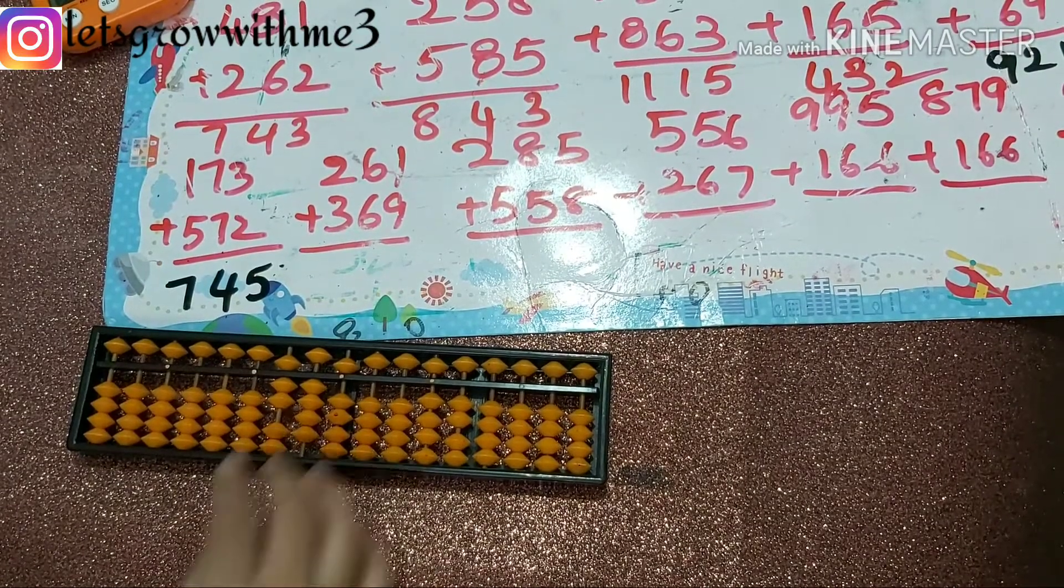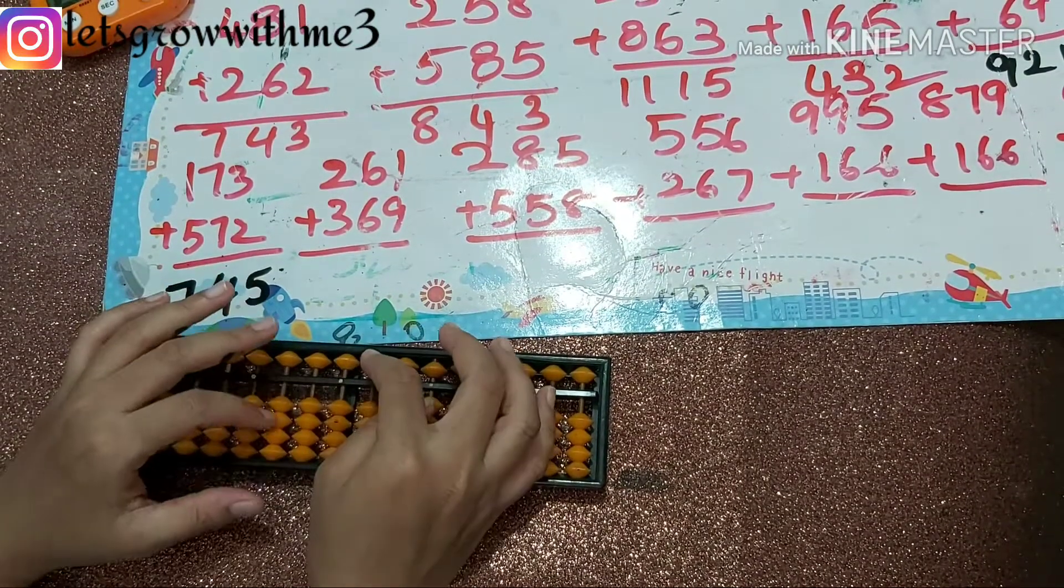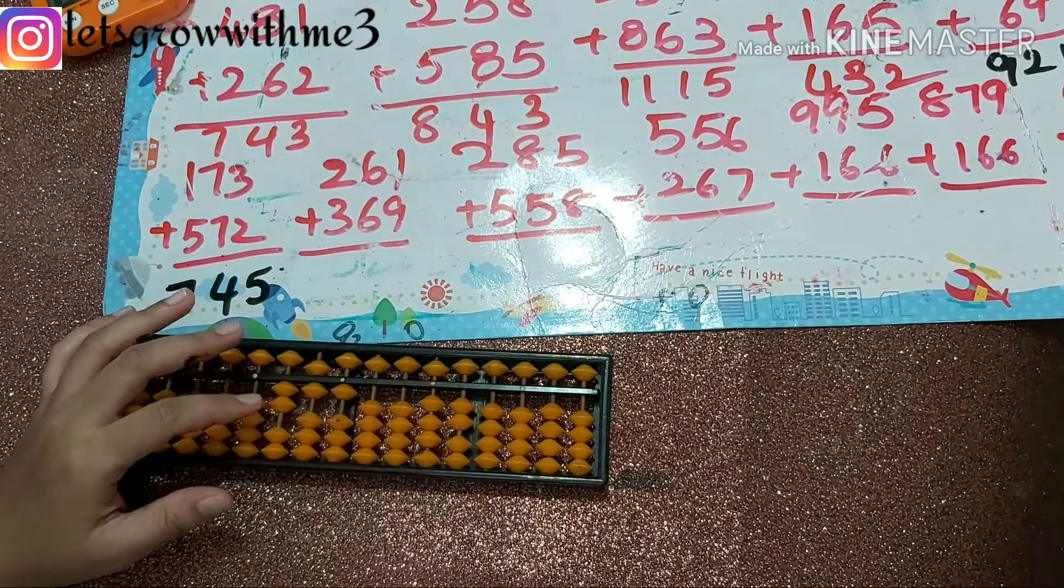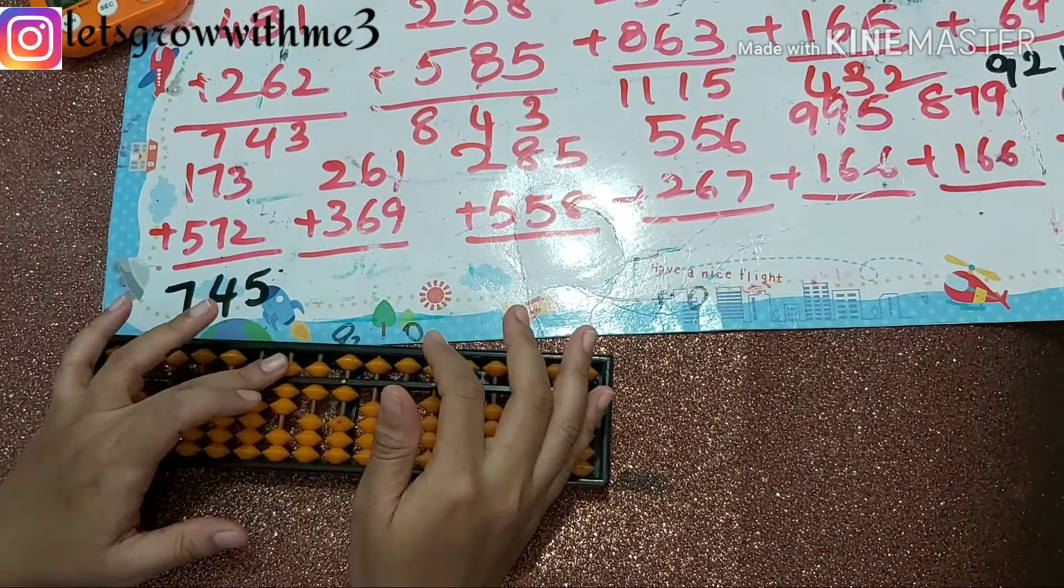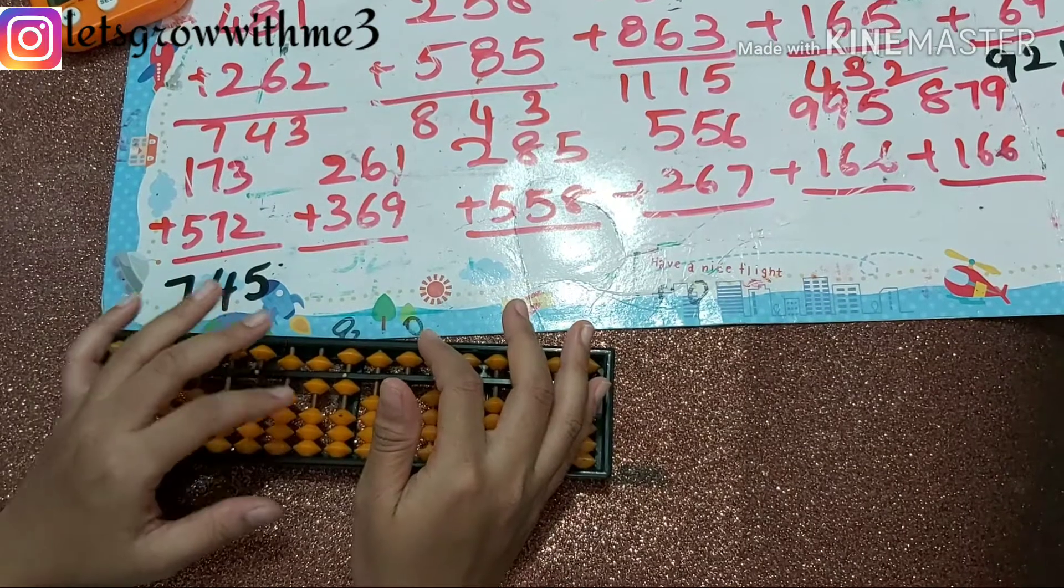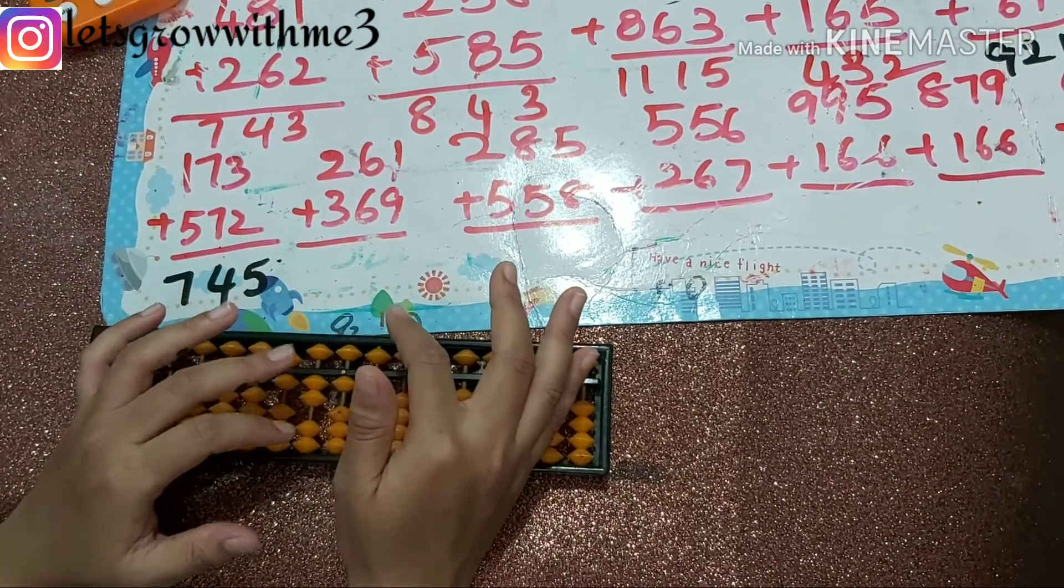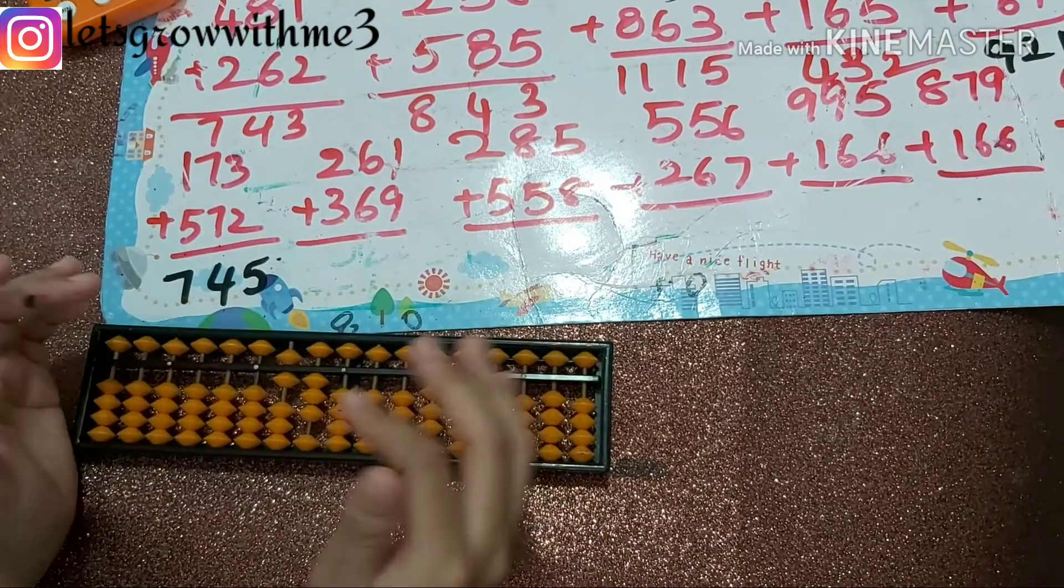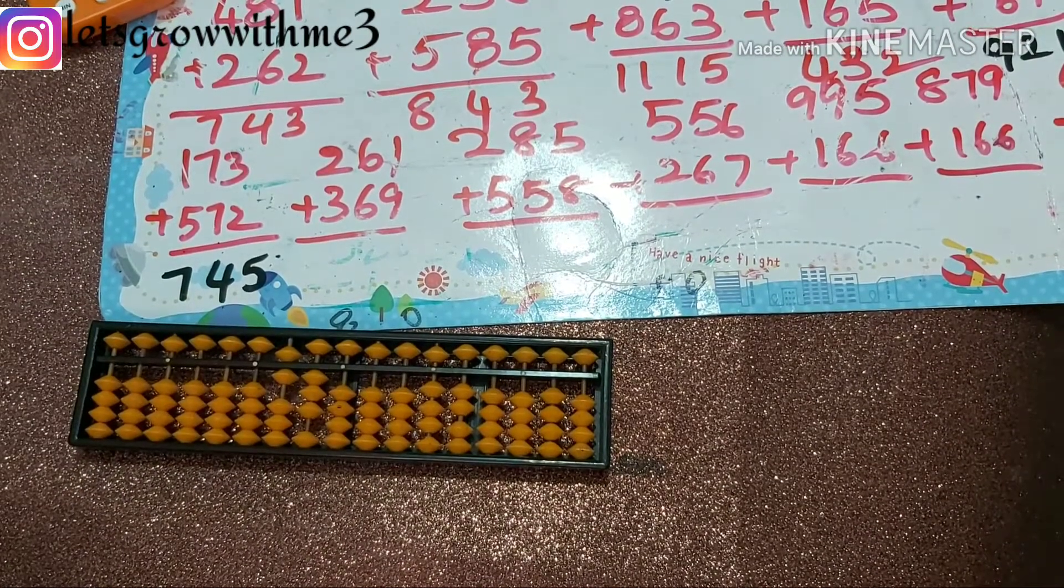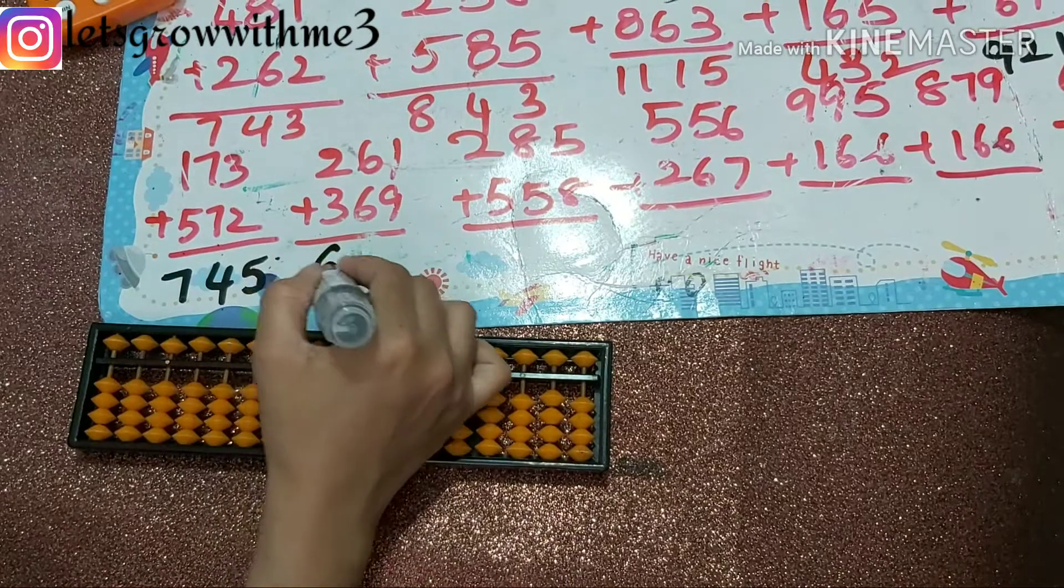Next one: 261 plus 369. Plus 5 minus 2, plus 6 papa, mama, babies up. Plus 9, plus 10 minus 1. So answer is 630.